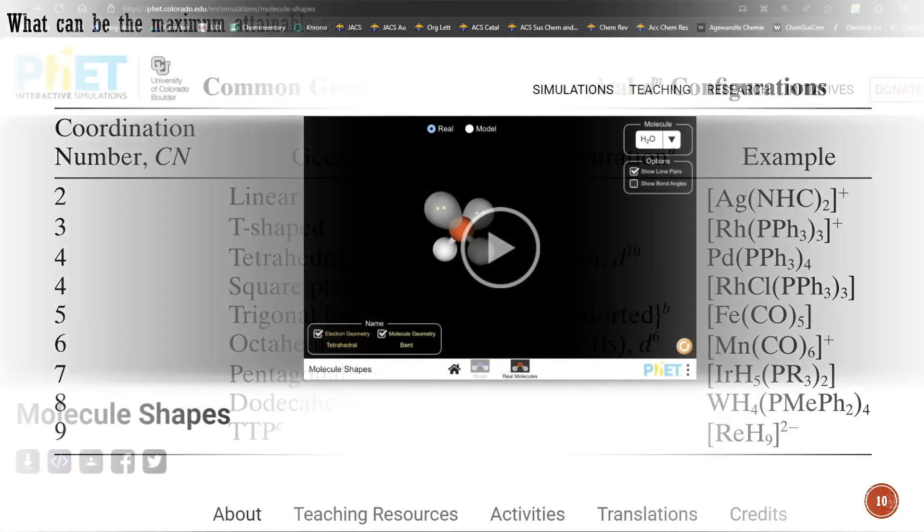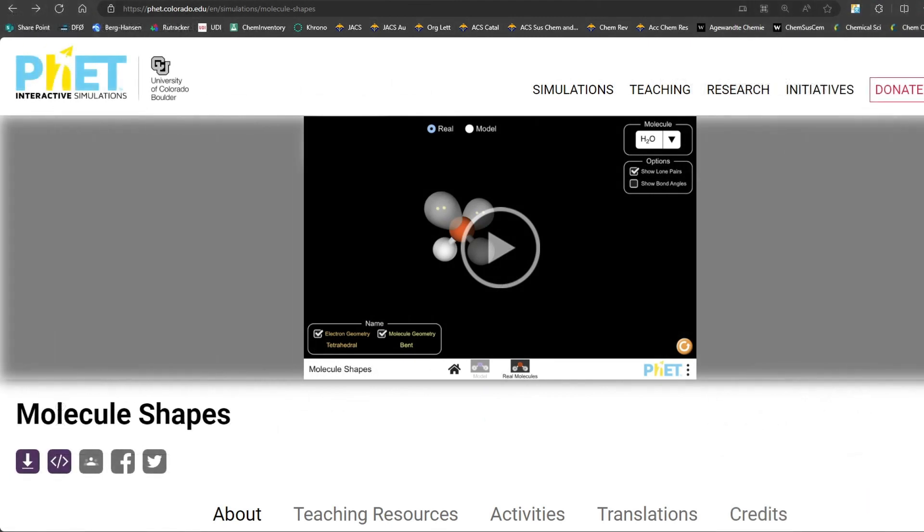To visualize the geometry of transition metal complexes, one can use the web-based application called Molecular Shape, developed by the University of Colorado Boulder. This visualization tool is based on the principle that the ligands in the given complex attempt to stay as far from each other as possible, and each non-bonding pair of electrons occupies as much space as a metal-hydrogen bond. Despite some drawbacks, this application can be extremely useful for visualizing the shapes of organometallic compounds in three-dimensional space.